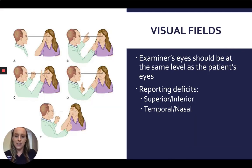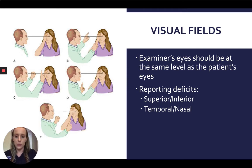The fourth vital sign to check is the patient's visual fields. In this diagram, you can see the normal setup for the test. One key point is that the examiner's eyes should be at the same level as the patient's eyes during testing. Make sure to test all four quadrants, and when reporting any deficits, use the terms superior, inferior, temporal, and nasal to describe exactly which visual field is affected.